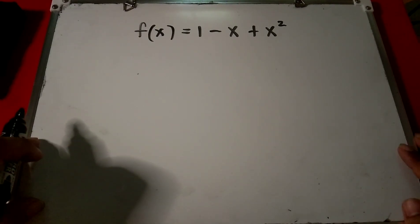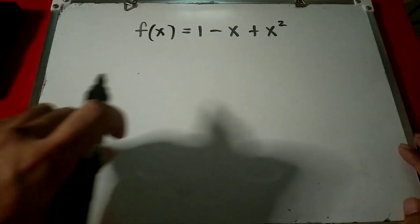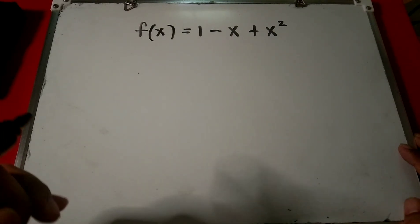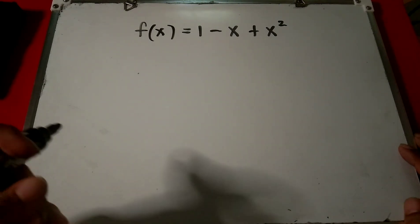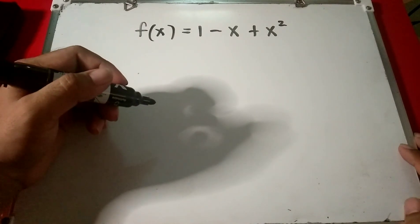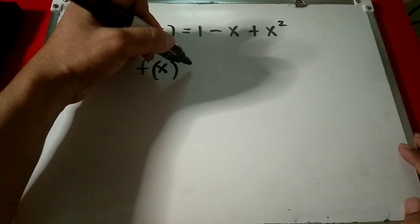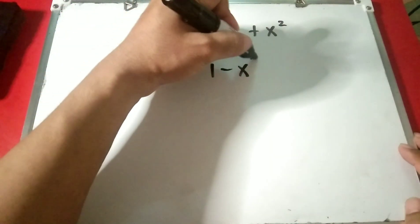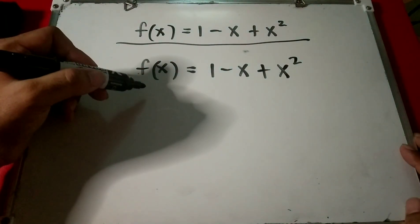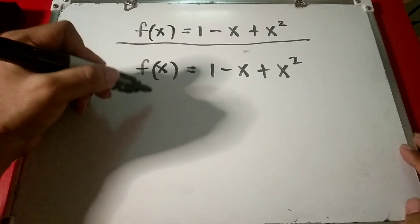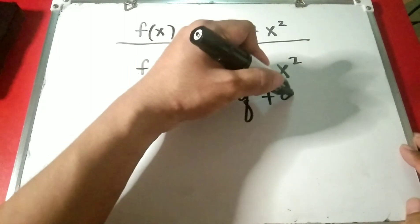Here is another function: f of x equals 1 minus x plus x squared. An important note — x is just a placeholder and f is just a name or label for the function. So these are all the same function: f of q equals 1 minus q plus q squared is the same thing.